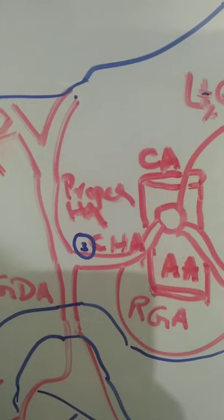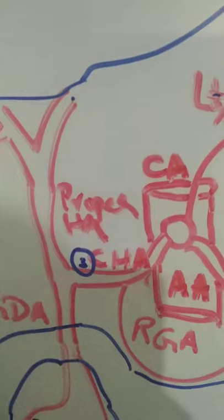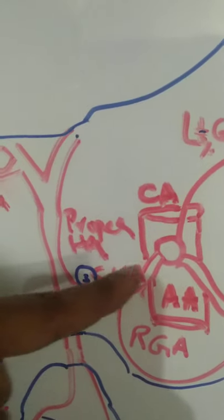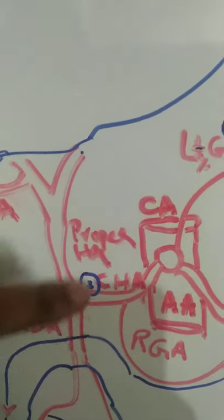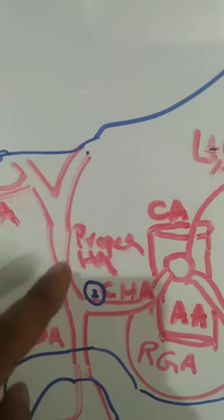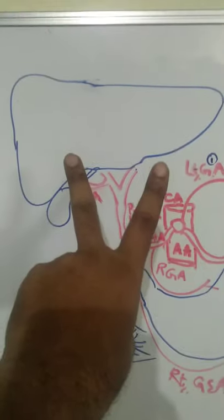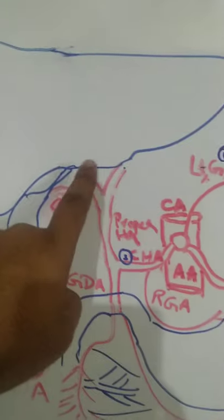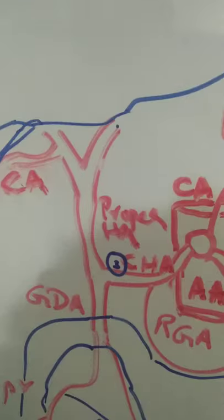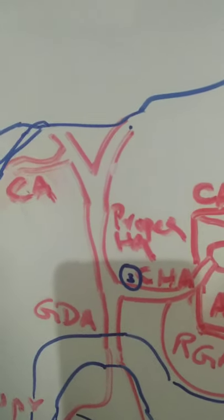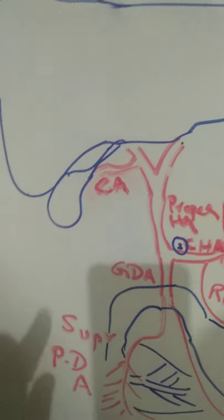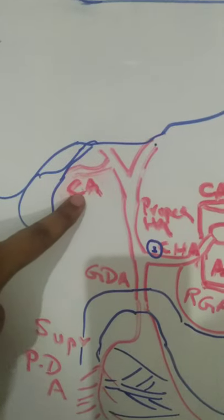The third branch is the common hepatic artery, running on the upper part of the duodenum and the pylorus of the stomach in the lesser omentum. When this common hepatic artery turns upwards toward the liver, it is called the proper hepatic artery. The proper hepatic artery splits into two branches because the liver has two lobes: the right branch supplies the right lobe, and the left branch supplies the left lobe. Since the gallbladder lies next to the right lobe, the right hepatic artery gives the cystic artery to supply the gallbladder.